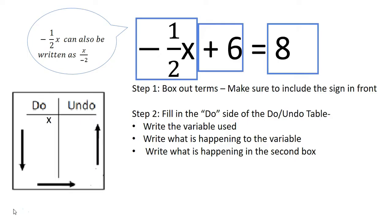So on the Do side of our Do-Undo box, we will start with the variable term. It is dividing by negative 2. We will then move to the next term, which is to add 6.